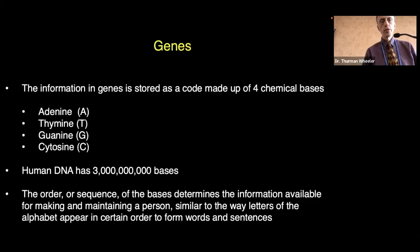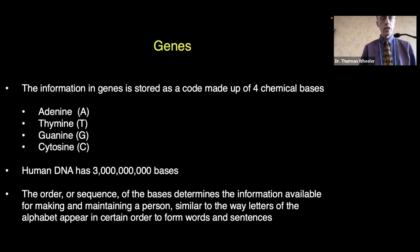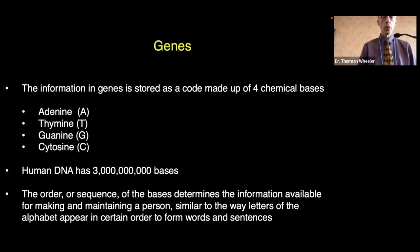Genes include information stored as a code made up of four chemical bases: adenine, thymine, guanine, and cytosine — abbreviated ATGC. Human DNA has more than three billion bases. The order or sequence of these bases determines the information available for making and maintaining a person, similar to the way that letters of the alphabet appear in a certain order to form words and sentences.